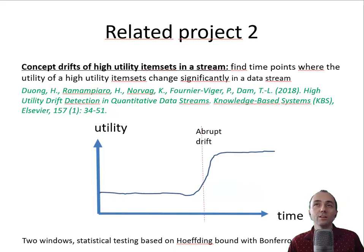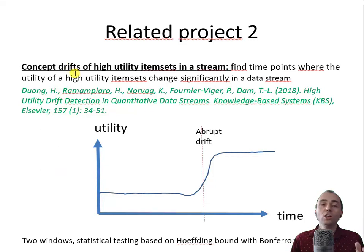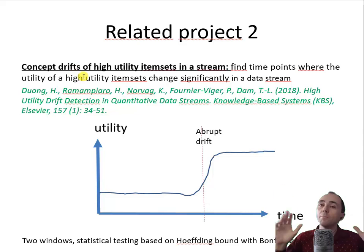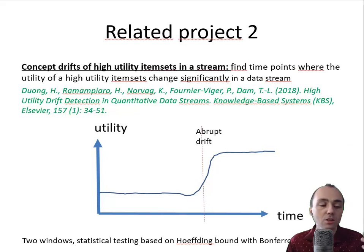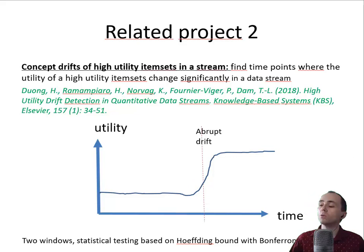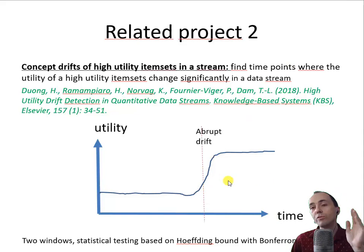Another project is finding sets of items that have some drift in the data. A drift means that over time, the utility changes a lot at certain time points. For example, on a TV show, someone says some products are very good. Suddenly, everyone starts to buy the product, so there will be a drift. We want to find this drift — where people start buying some products together at a notably different rate.